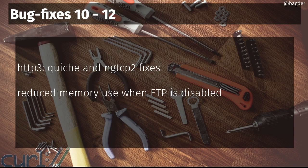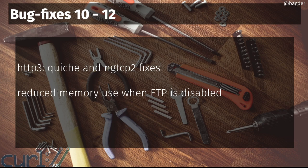We reduced memory use a little bit when FTP is disabled. One of our constant needs is to ensure that when you remove a feature or protocol from the build, it should also be completely removed — no extra data or code left behind. In this case, when you removed FTP support, it still allocated memory for things that wouldn't actually be used because FTP was disabled. So this makes the curl memory footprint smaller when you build a curl version without FTP enabled.